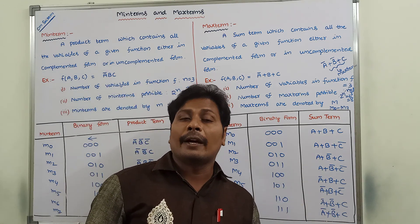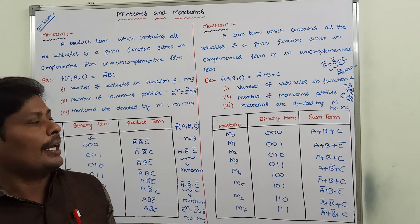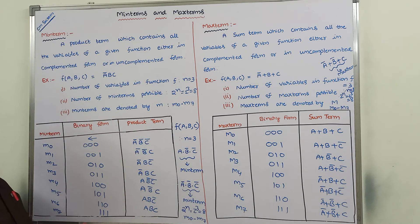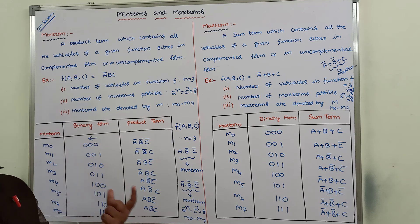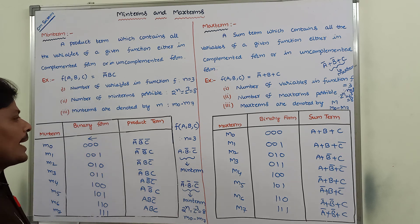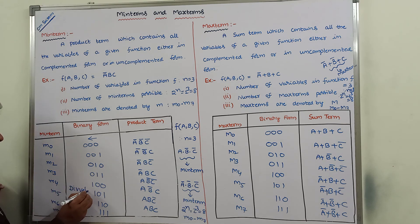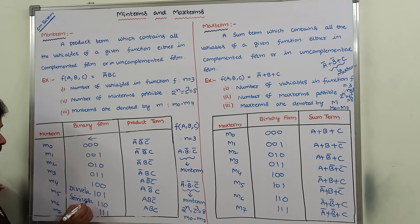The common point is that the possible number of min terms equals the possible number of max terms, which is 2 power n, where n is the number of variables in a given function. So this is the description about what is min term, what is max term, and how we are representing them. Thank you for watching this video. Please share this video with your friends and classmates, and please subscribe to the channel: Divvela Srinivas Rao.